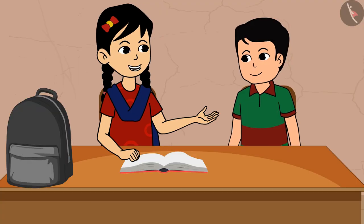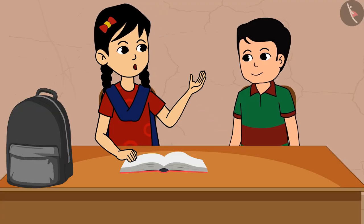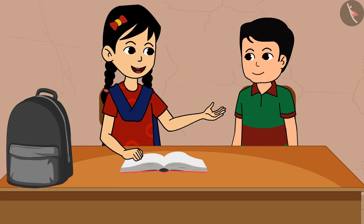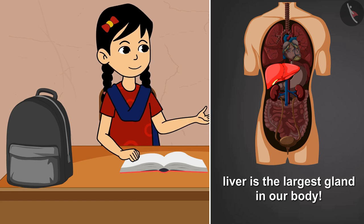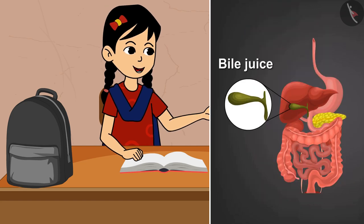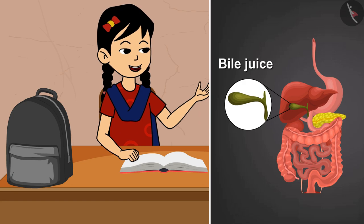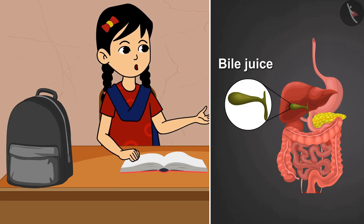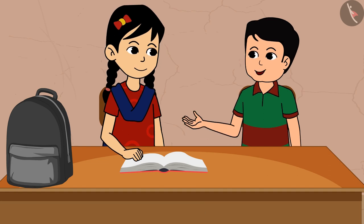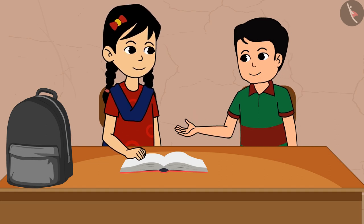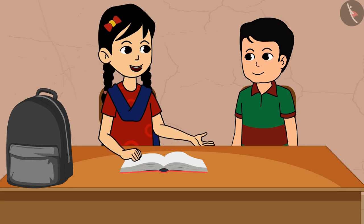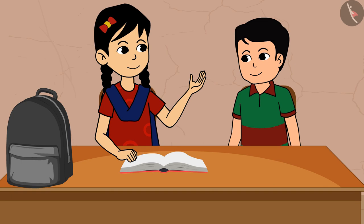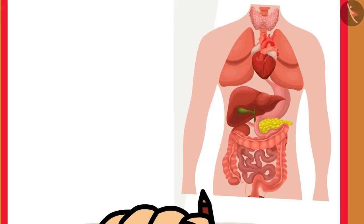Didi: Yes, it's true — it can coil like a rope and hence fits in easily. Do you know, Sonu, the liver is the largest gland in our body? It secretes bile juice, which plays an important role in the digestion of fats. The liver is situated in the upper part of the abdomen on the right side.